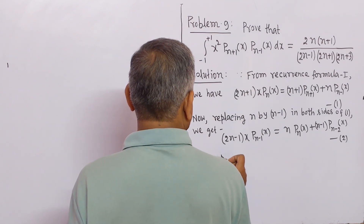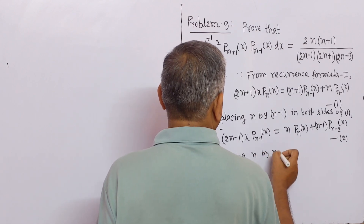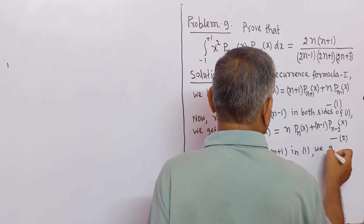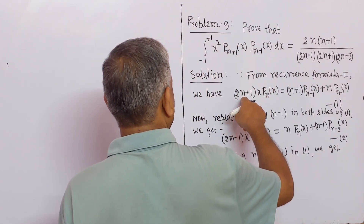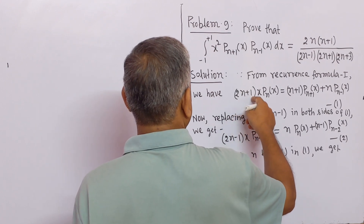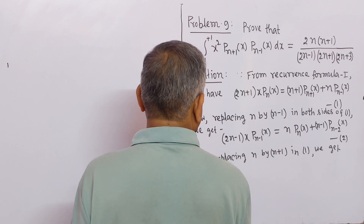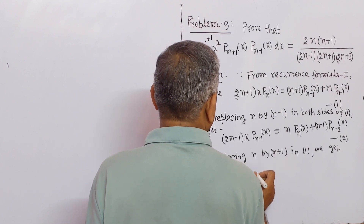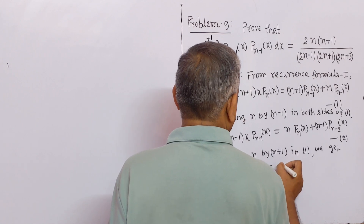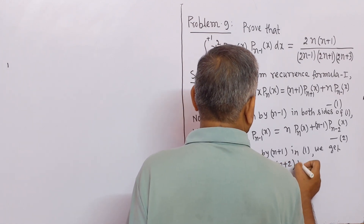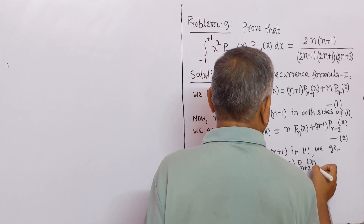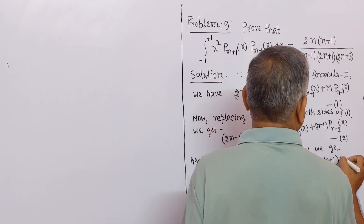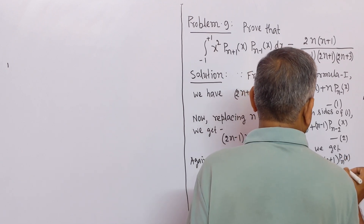Again, replacing n by n+1 in equation 1, we get: (2n+3) x P_(n+1)(x) = (n+2) P_(n+2)(x) + (n+1) P_n(x). This is equation number 3.